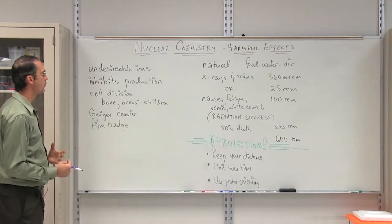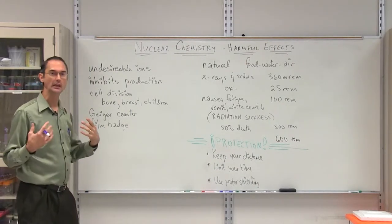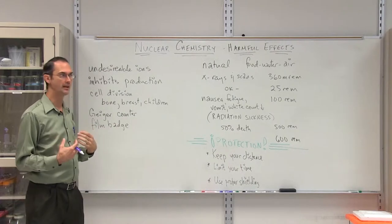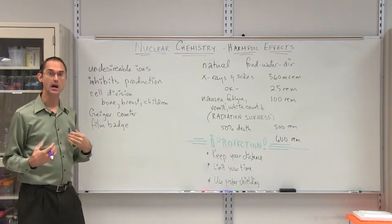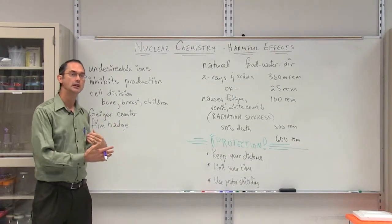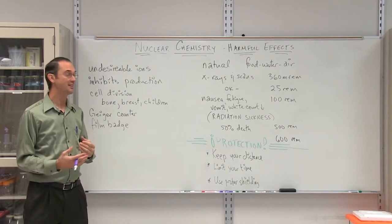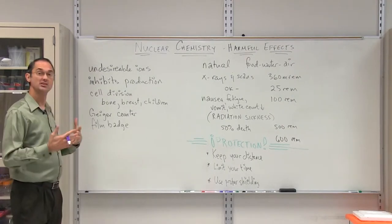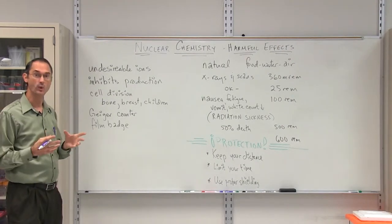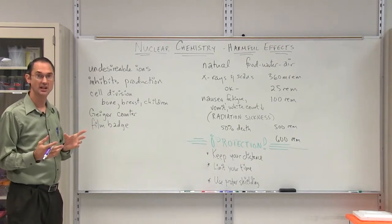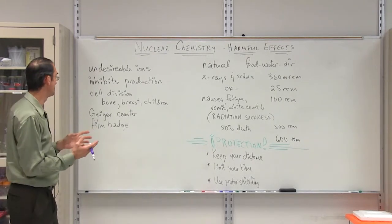Now the first thing is that when nuclear radiation does come into contact with a human body, it creates undesirable ions. It can cut DNA, it can cut large molecules. It basically will create these undesirable ions that interact in bad ways, break down cells, and cause problems with cell division.